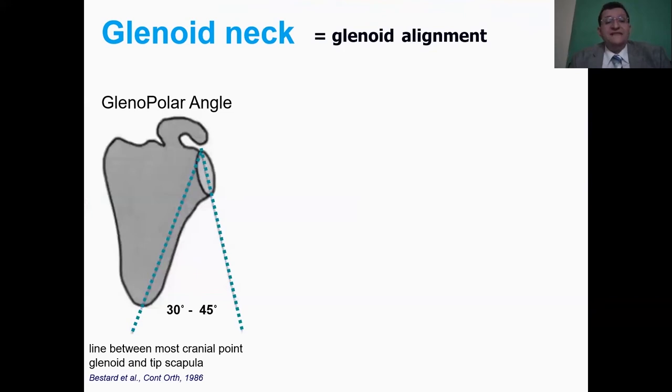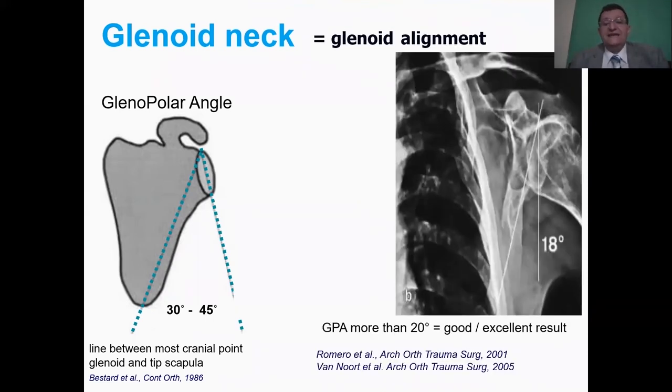While the glenopolar angle represents a line between the most cranial point of the glenoid at the tip of the scapula and the angle of the glenoid, it's usually between 30 and 45 degrees. If it's less than 20 degrees, usually results are not that good, while good and excellent results are usually in angles more than 20 degrees.